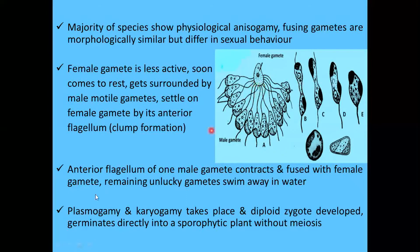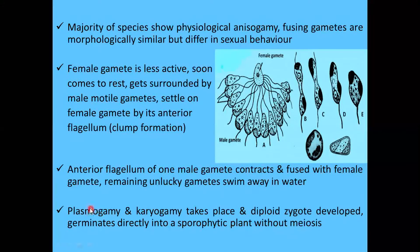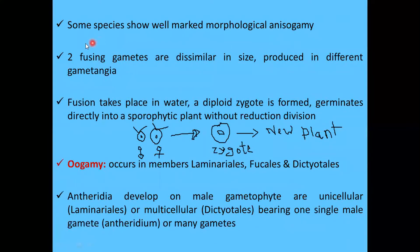After fusion, plasmogamy and karyogamy take place — the cytoplasm fuses first, followed by nuclear fusion — and a diploid zygote is developed, which germinates directly into a sporophytic plant without meiosis.